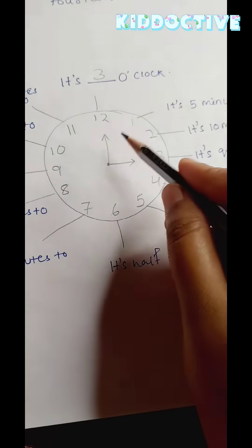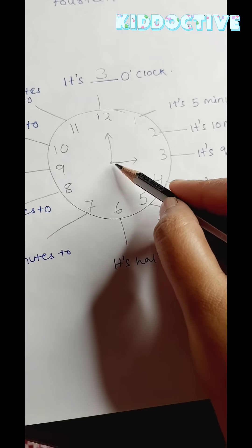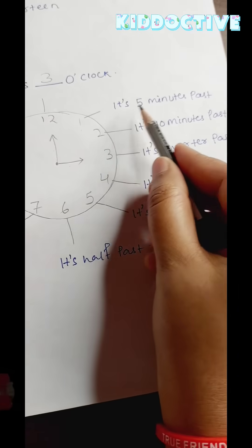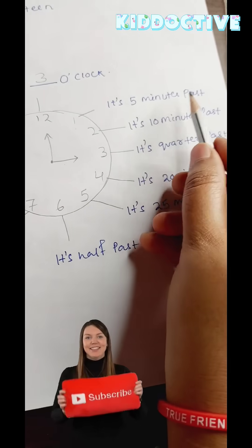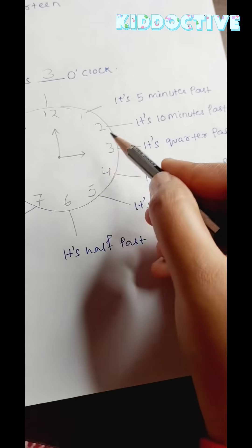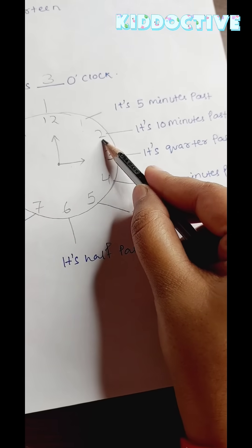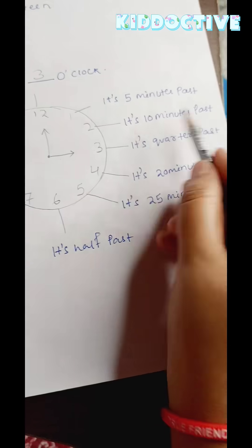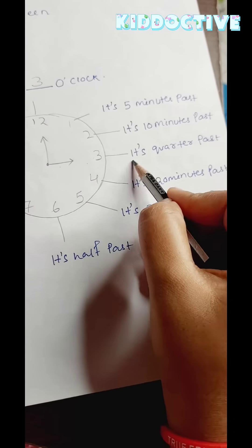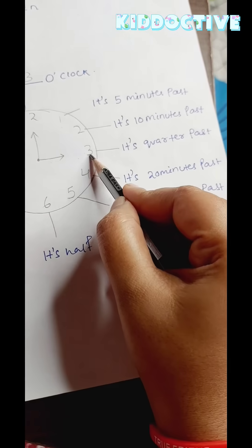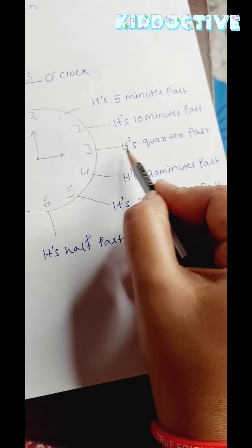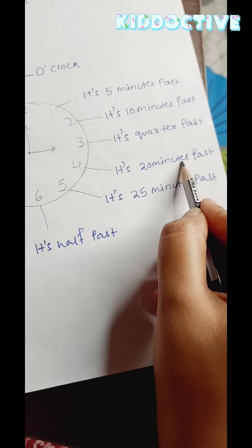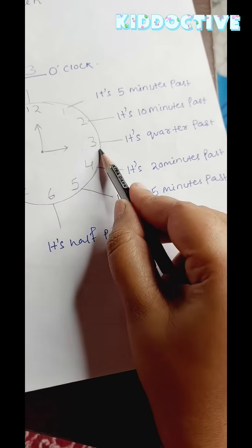Now, when the minute hand goes to 1 then it's 5 minutes past 3. If it is on 2 then it's 10 minutes past 3. It's 15 minutes past, which is quarter past 3. It's 20 minutes past 3.